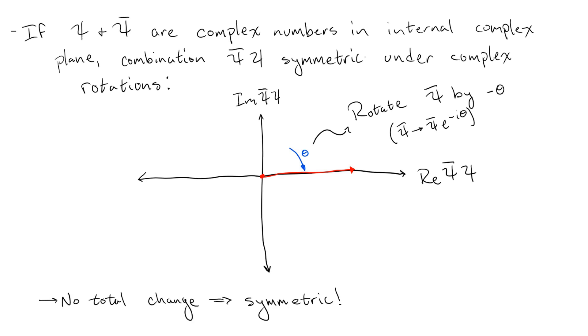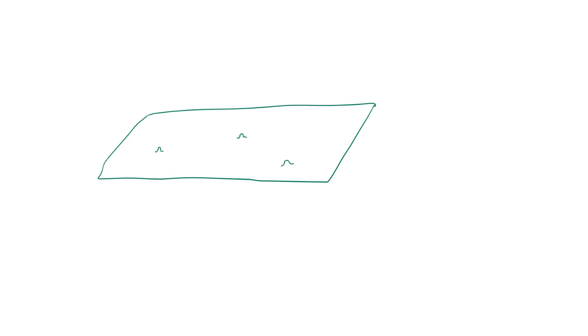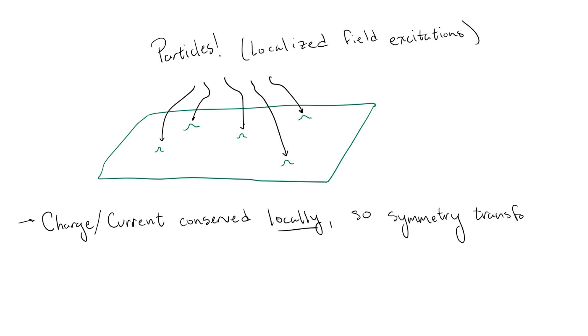We're getting close, but this isn't quite the end of the story. See, when we observe protons and electrons, we observe them as particles, which are excitations of their respective fields, localized to points in spacetime. Since these are local objects, and charge is conserved for each particle, charges should be conserved locally. So, the symmetry transformations corresponding to these conserved charges should also be local.